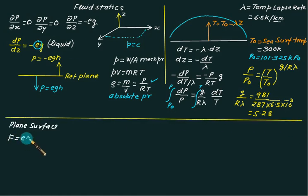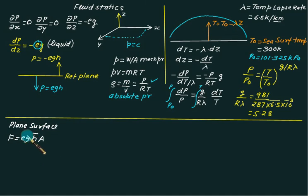So we have only one formula is rho into g into h bar into area, where h bar is the distance of centroid from free surface level. Position of center of pressure from free surface which is h bar plus moment of inertia by the centroidal axis multiplied by sin squared theta upon A h bar.